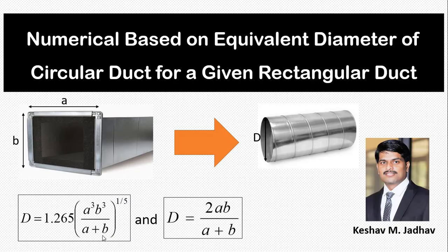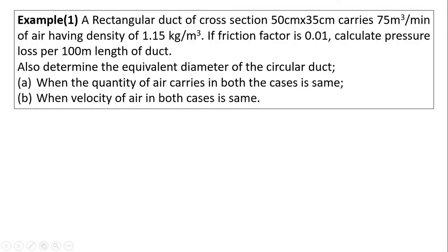For both numericals we have considered two criteria. The first criteria is we have to keep the same flow rate of air through both ducts, and in that case we use the first formula. The second criteria is we have to keep the same velocity in both ducts, and for that purpose we use the second formula. So let us solve the first numerical.